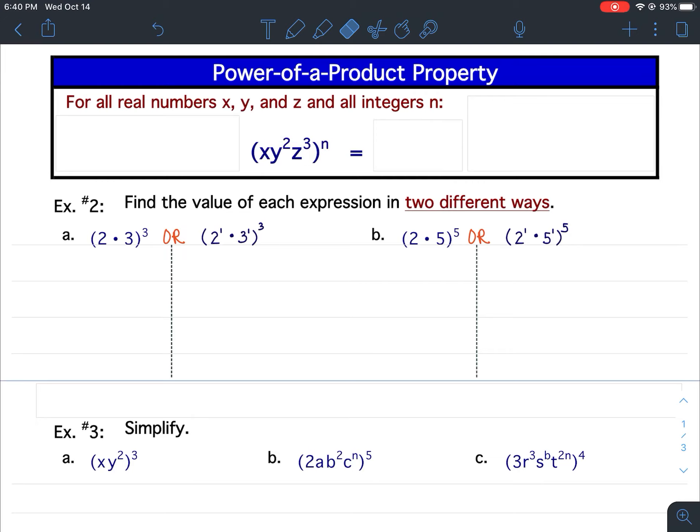So for all real numbers x, y, and z, and all integers n, when you have the monomial x, y squared, z cubed, all raised to the nth power, you get x to the nth, y to the 2 nth, and z to the 3 nth.